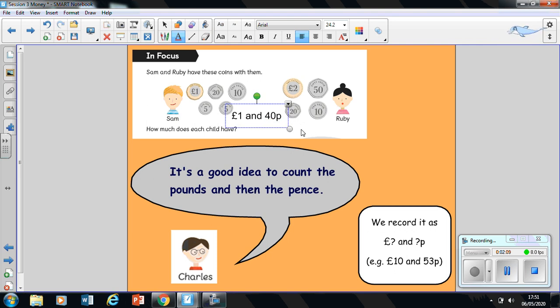That's how we record how much money we've got. In Ruby's case, she's got two pounds to begin with and then we add up our pennies. Could you record how much money Ruby's got in your journals the way I have shown you for Sam? Pause the video and have a go, and then we can move on.